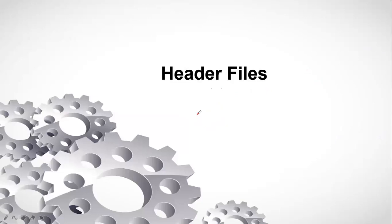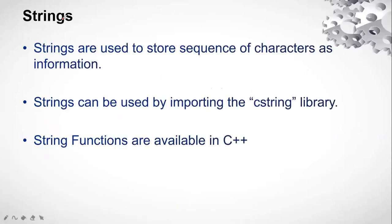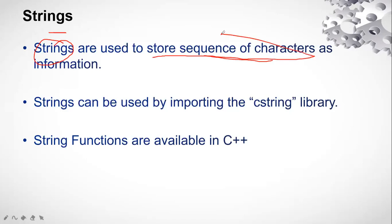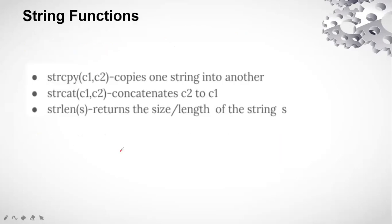Now let's look at two important header files. The first is strings. We already know that characters store a single character, but when we have a sequence of characters to store, we use strings. Whenever we store a sequence of characters, it is stored in strings. String functions available in C++ can be imported with the help of the C string library — we need to include the cstring header in the program.